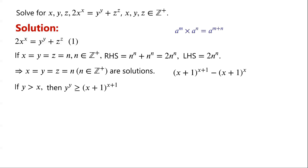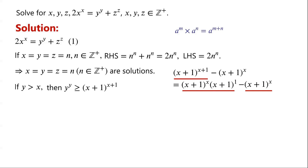We know that a to the power of m times a to the power of n equals a to the power of m plus n. Applying this, (x+1)^(x+1) equals (x+1)^x times (x+1)^1. The two terms have a common factor (x+1)^x, so they can be factorized and written as (x+1)^x times (x+1 minus 1), which equals x times (x+1)^x. Since (x+1)^x is greater than x^x, we can write this is greater than x times x^x, which equals x to the power of x+1.